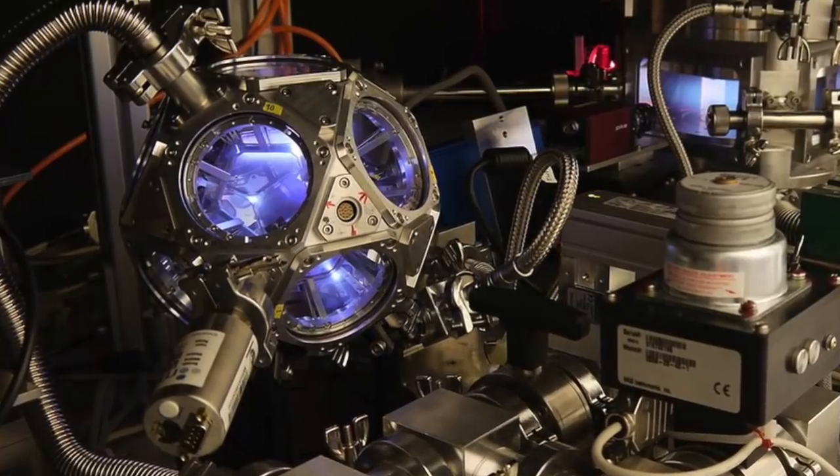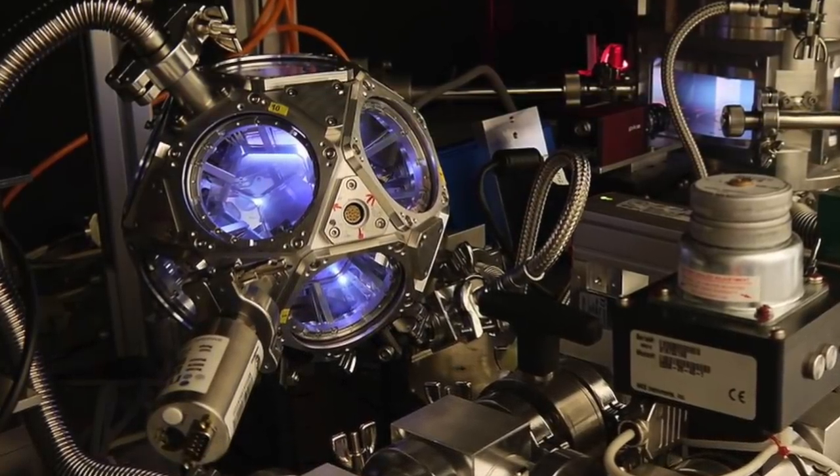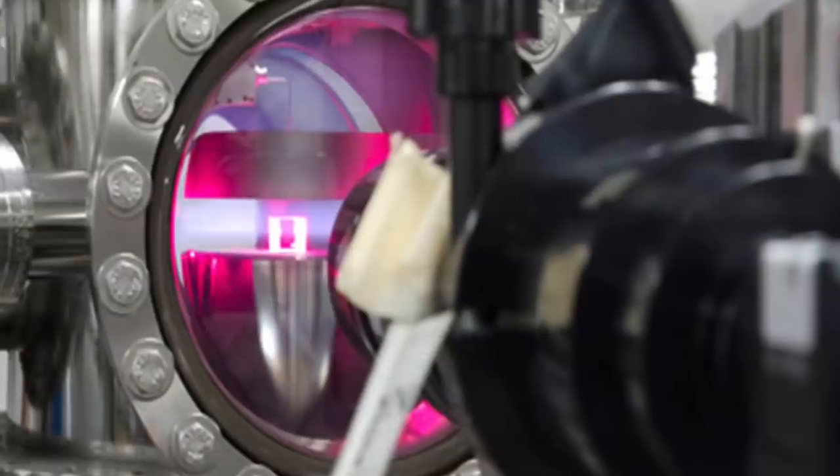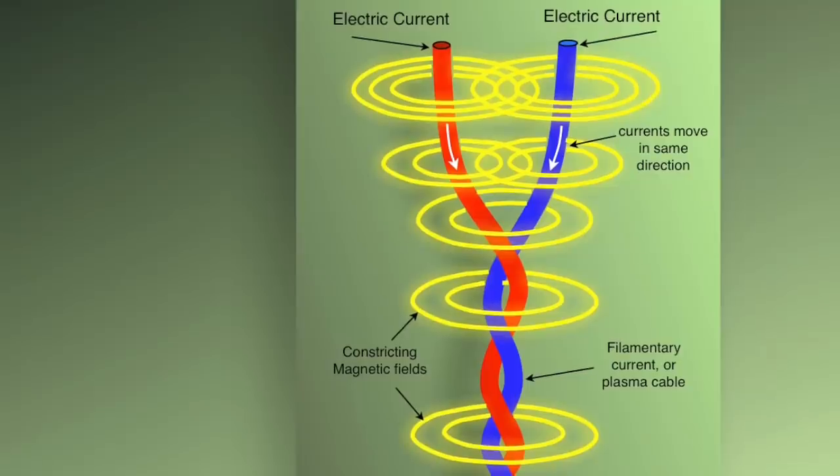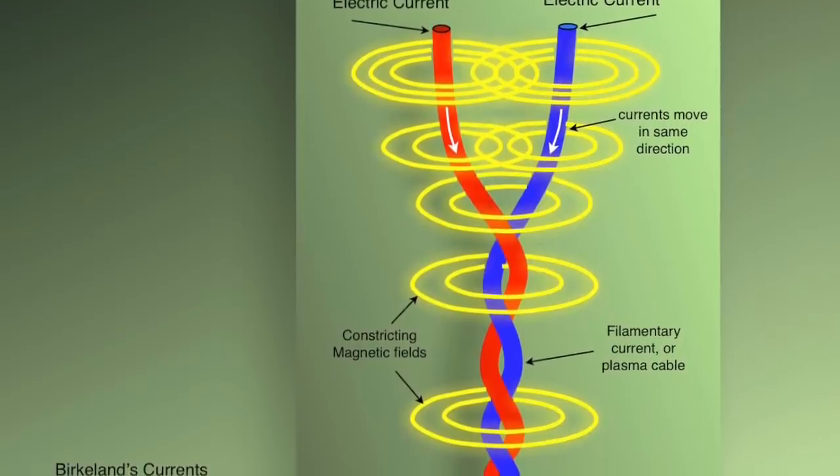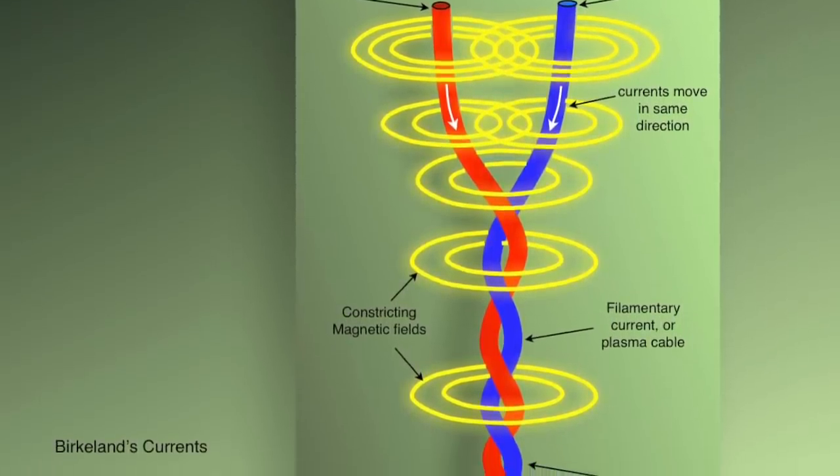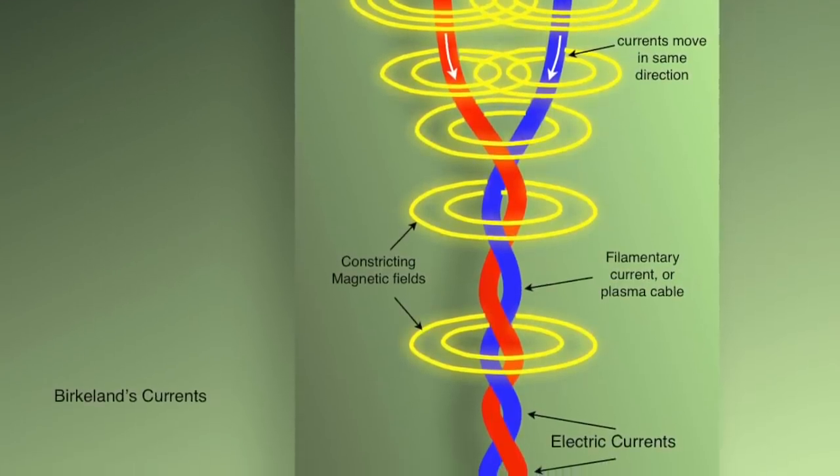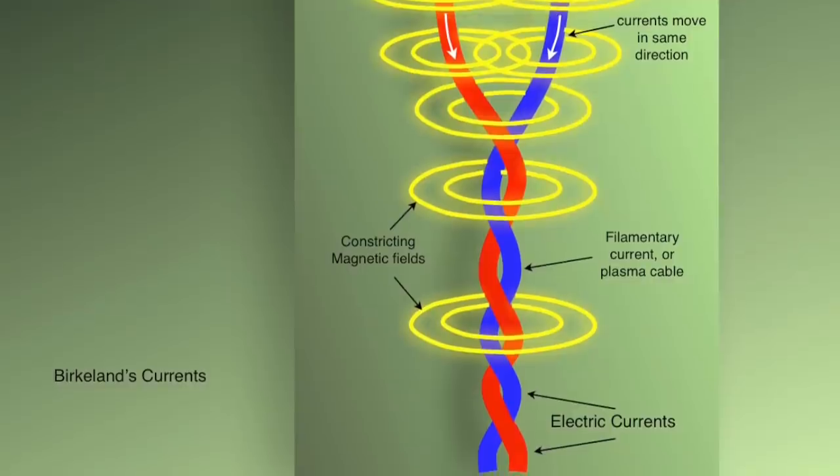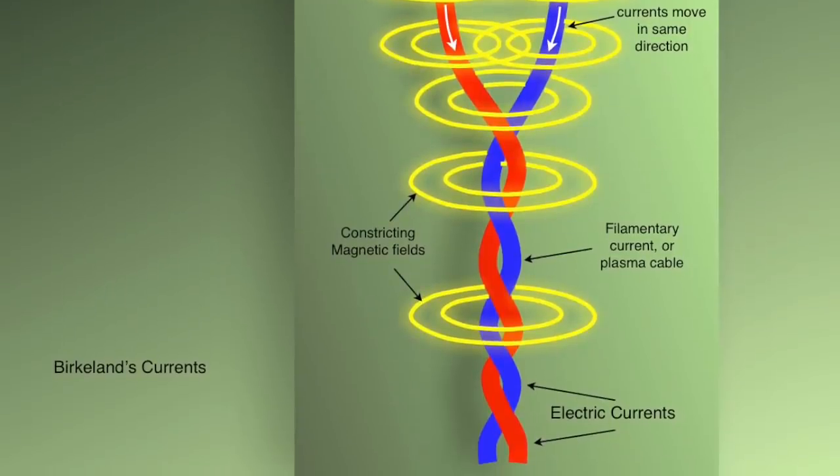However, plasma physicists have known for many decades that when clouds of plasma move relative to each other, they generate electric currents in each other. As shown experimentally in plasma laboratories, electric currents in plasma take the form of twisted filament pairs, and these follow the direction of the ambient magnetic field. The filamentary current is electrically insulated from its surroundings.